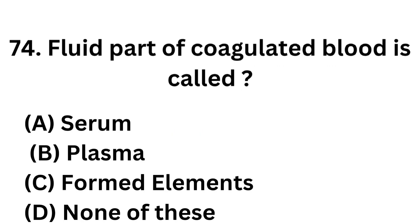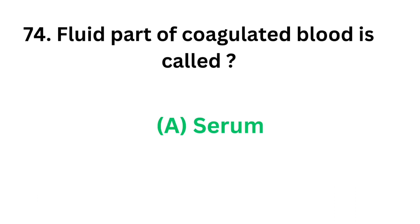Question number 74. The fluid part of coagulated blood is called: Option A: Serum. Option B: Plasma. Option C: Formed elements. Option D: None of these. The correct answer is Option A: Serum. The fluid part of coagulated blood is called serum.